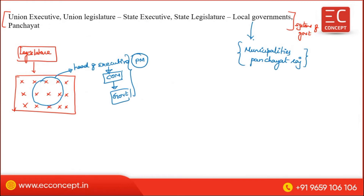In India, we have three levels of government: Union, State, and Local Government. These three systems together make up the Indian government. That is the system of government in India.